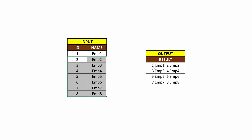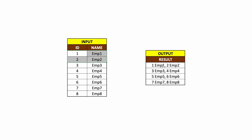Now what we need to do is come up with an output like this. There are two things happening here. The first thing is we have '1 employee one, 2 employee two' — they are concatenating ID and name together with a space in between. The second thing is they are merging two records together and putting them into a single column. So employee one and two are merged as one row, then employee three and four, then five and six, and finally seven and eight.